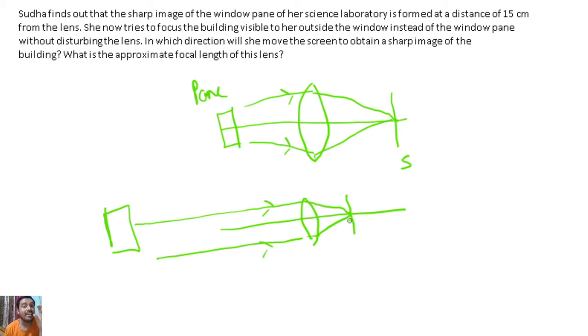So, for the tall building image, to get a clear image, the screen is moving but the lens is not moving. The screen is going to move closer to the lens. The distance is changing.